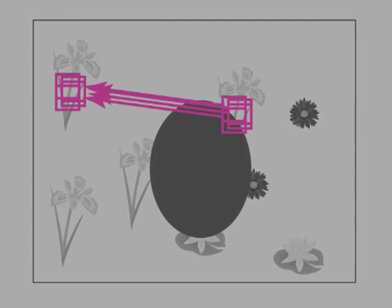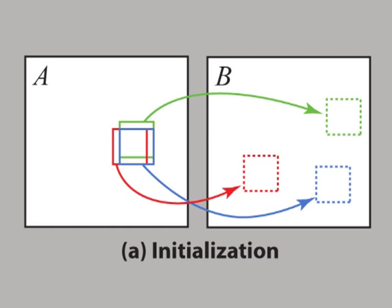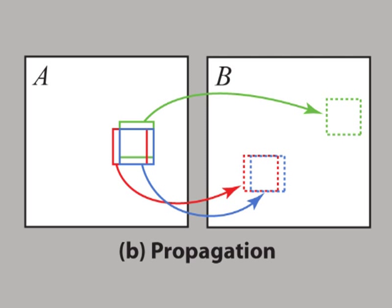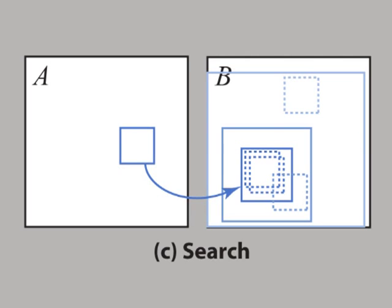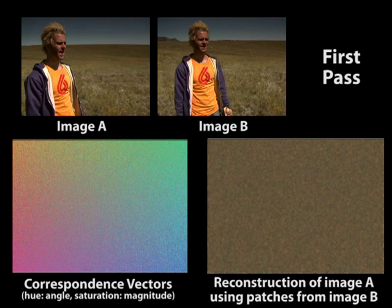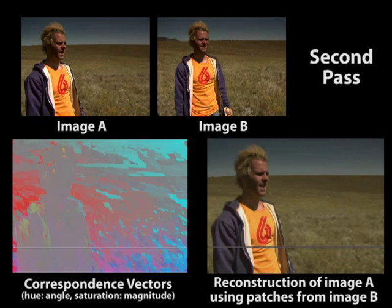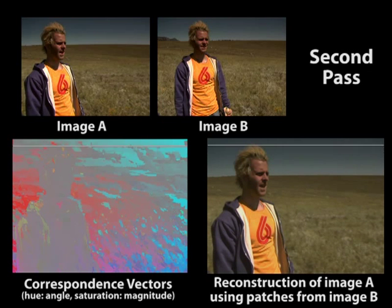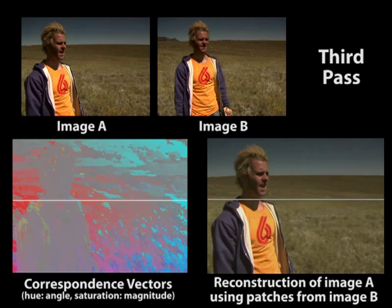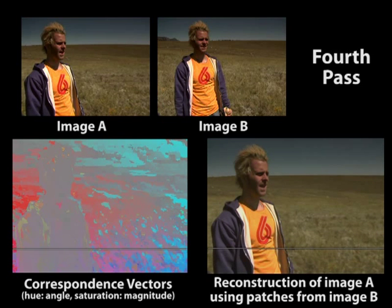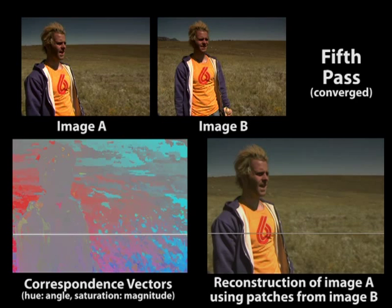Armed with these two observations, we begin with a random initial guess for the patch correspondences and iteratively improve the results. Our algorithm alternates between propagating good correspondences to neighboring patches and sampling the nearby image space to find even better correspondences. Although the initialization is completely random, a few lucky guesses propagate quickly to neighboring pixels in the propagation phase. The random sampling phase complements this greedy approach by helping to avoid local minima. The algorithm generally converges in just a few passes, and is over an order of magnitude faster than the state of the art, enabling a new approach to interactive image editing.